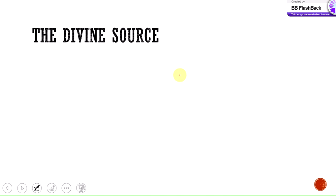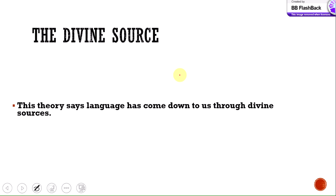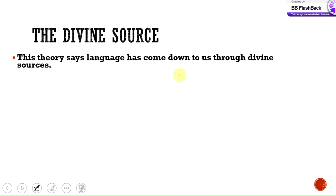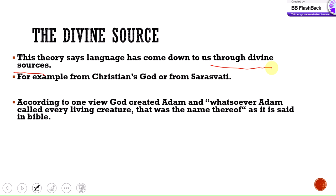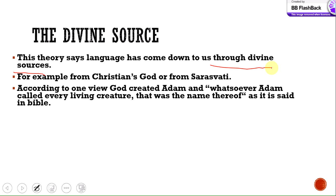The first source is the Divine Source. This theory says language came down to human beings from God — it is God-gifted. For example, according to the Bible, God created Adam, and whatsoever Adam called every living creature, that was the name thereof. So according to this reference, language came to us through a divine source and has religious roots in every religion.